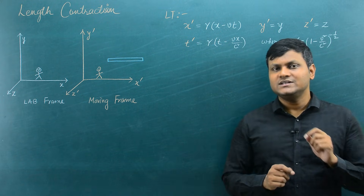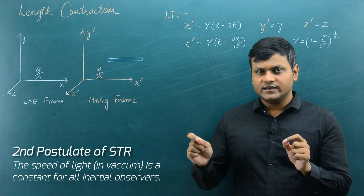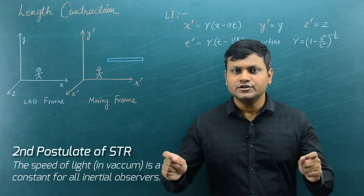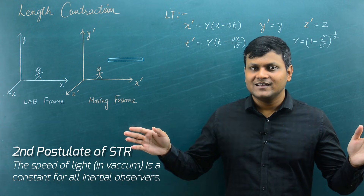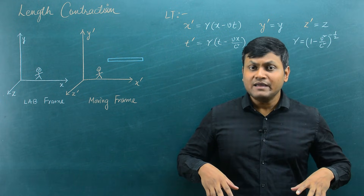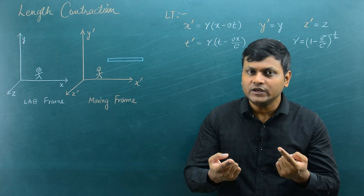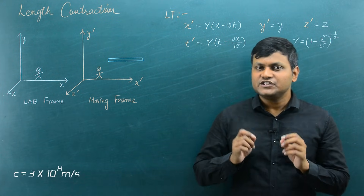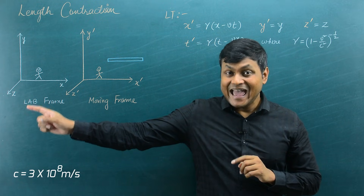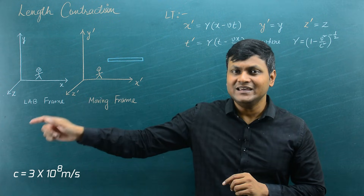In that video, I mentioned the second postulate which stated that the speed of light in vacuum is a constant for all inertial observers. It means that if I am at rest and I am measuring the speed of light in vacuum, I will measure it to be C. If there is another person traveling at very high velocity compared to me and he measures the speed of light in vacuum, he will measure it to be C.